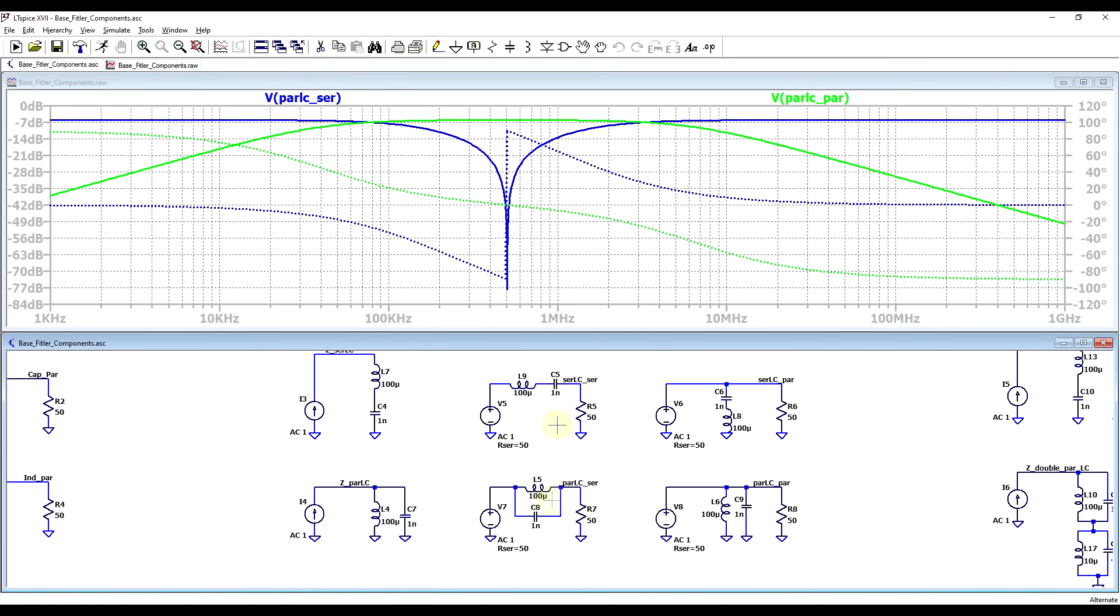We see a similar story for the parallel LC circuits. Even though I'm using the same components, the series and parallel circuits show slightly different behaviors. The same corner frequencies are involved, but different shapes are present in the graphs.